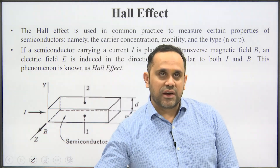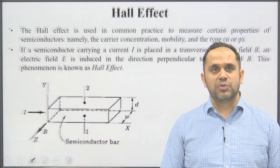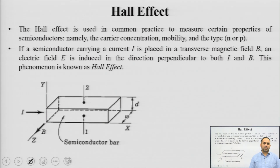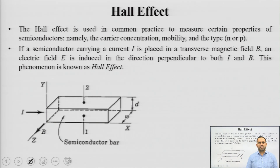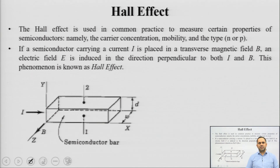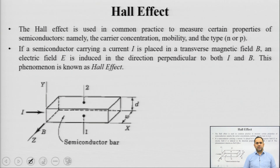In the last lecture, we had started the concept of how charge carriers move inside a semiconducting crystal. We had identified that semiconductors tend to be bipolar in nature, which means carrier conduction can be because of two types of charge carriers, namely electrons and holes. These both charge carriers are complementary to each other in terms of their charge carrying capacity or direction of movement.